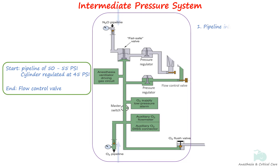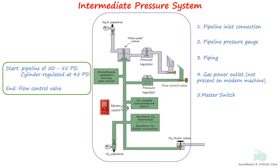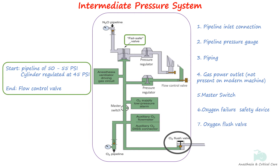The intermediate pressure system consists of pipeline inlet connection, pipeline pressure indicator or gauge, piping, gas power outlet (which is not present on latest machines), master switch, oxygen failure safety device, oxygen flush, and flow control valves.